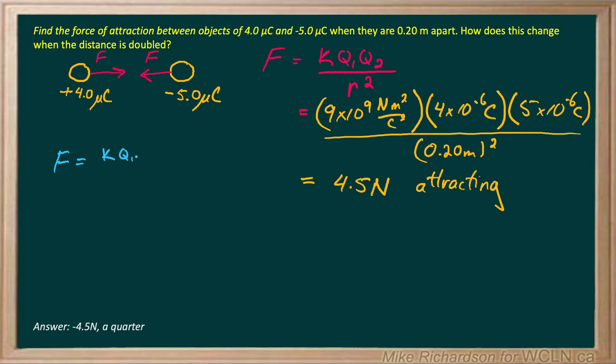It's K, Q1, Q2, which we're not changing, all over R squared. And we're going to just double R.